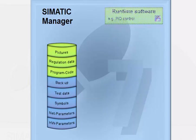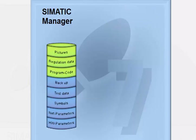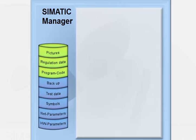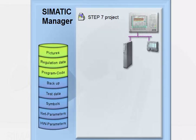We will now show you what the project data look like in the Simatic Manager, as seen by the user. The entire automation system is organized in a hierarchically structured project, whose function is the organized storage of all data and programs generated in the course of solving an automation task. All the objects handled by the Simatic Manager have an equivalent in the real objects of the plant.